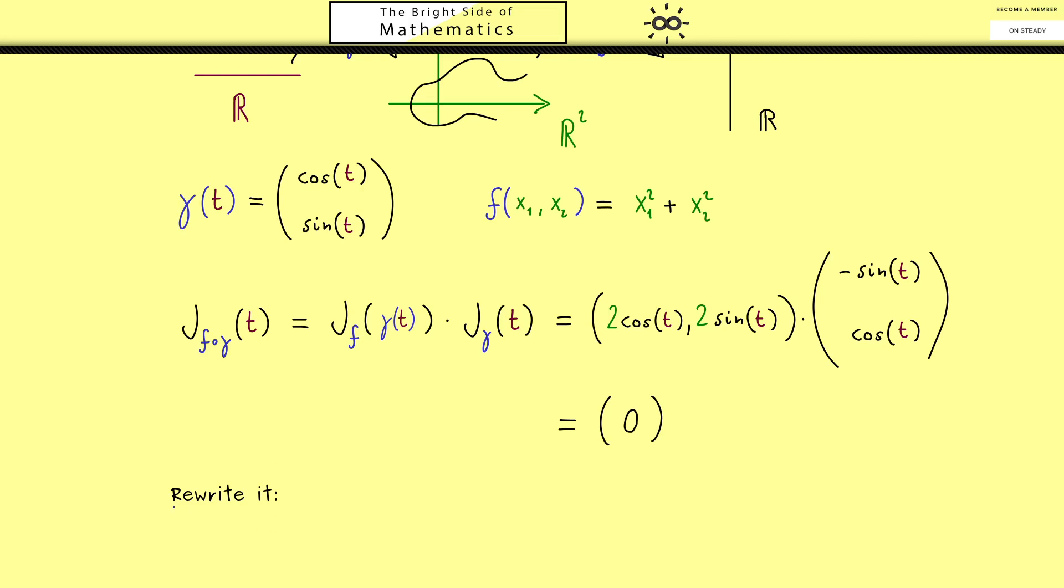Namely let's try using the gradient in the calculation. Of course you know the gradient of f is simply the transpose of this Jacobian matrix here. So simply this vector here but as a column vector. And then you should recognize the calculation we do here is simply the standard inner product in R². In other words we can rewrite this matrix product as an inner product. So we have the inner product of the gradient of f at the position γ(t) with the Jacobian matrix of γ(t). But of course this one we can simply write as γ'(t). Therefore in the end you see we just multiply two vectors in the inner product.